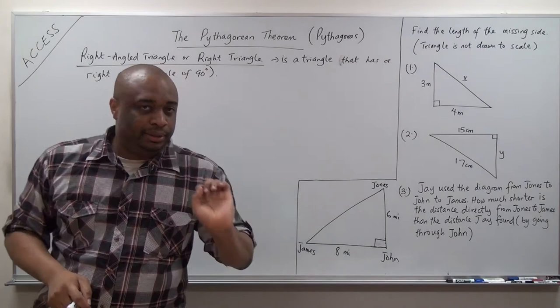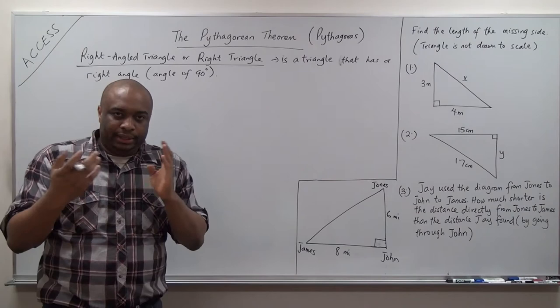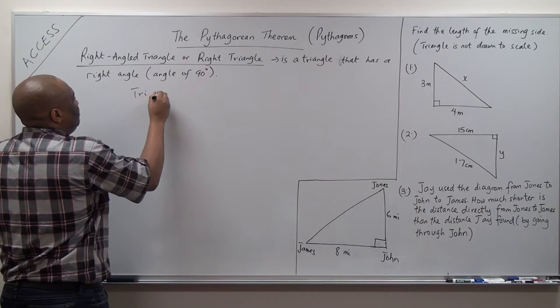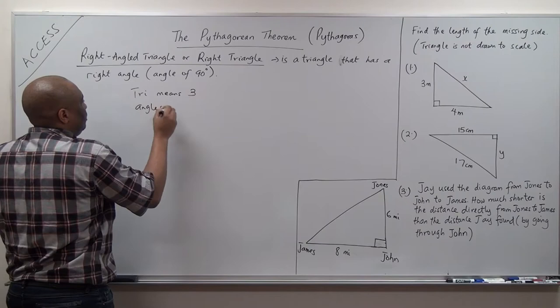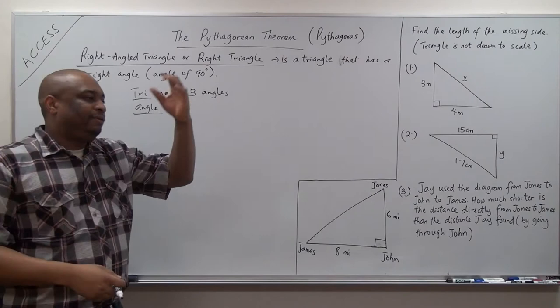The next thing is that a right triangle has three sides, just like any ordinary triangle. Triangle means three angles — tri means three. If it has three angles, then it has three sides.